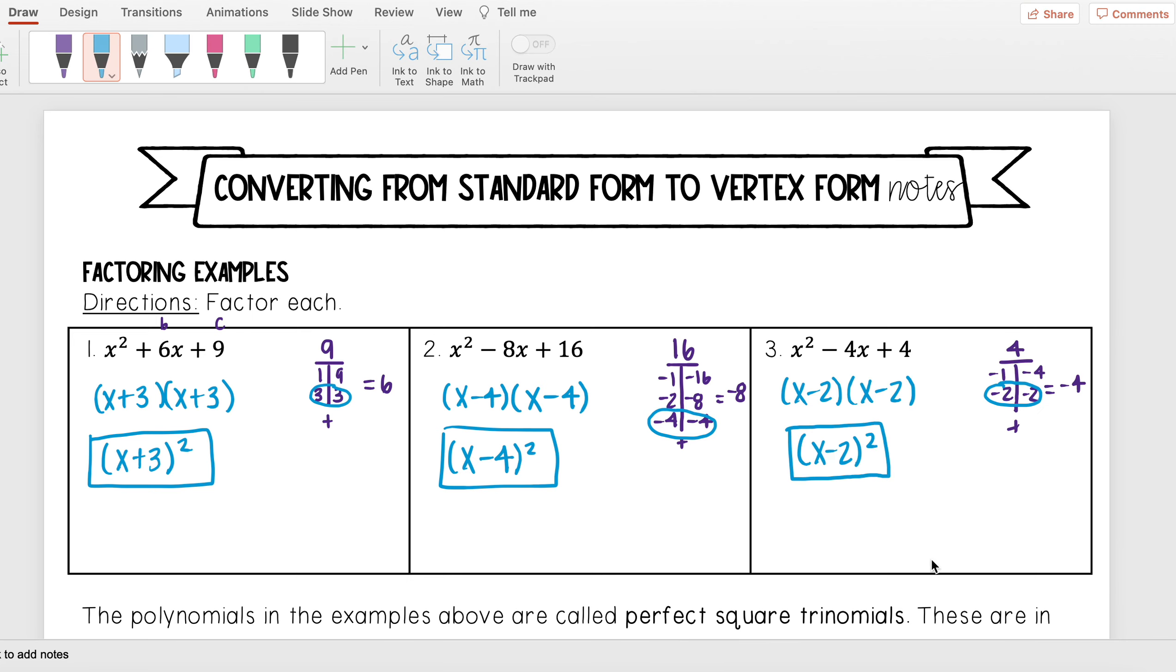So the answer you should have gotten here was x minus 2 squared. So negative 2 times negative 2 is 4. Negative 2 plus negative 2 gives me negative 4. And so I get this answer. So you notice all of these were perfect square trinomials. And that's what we're really going to be working on for our lesson today.